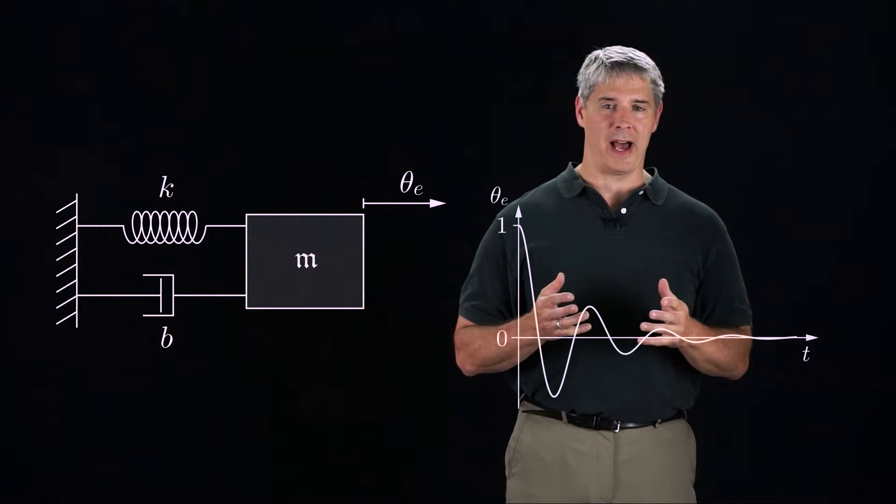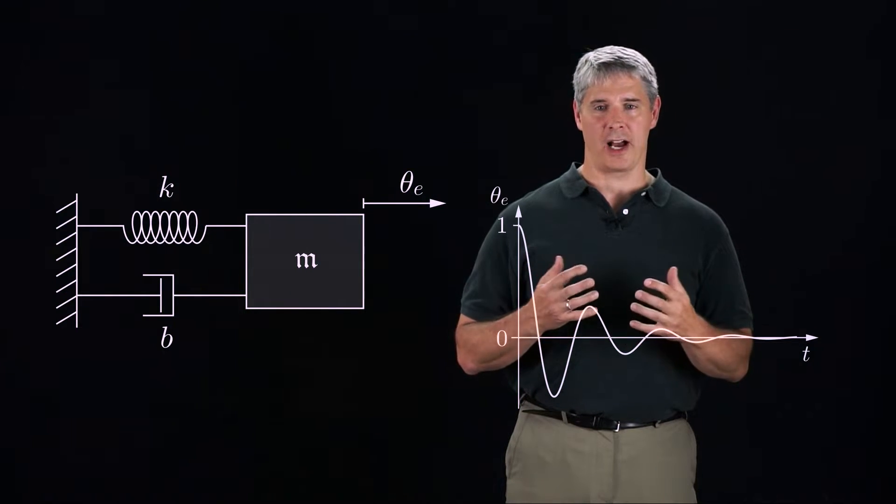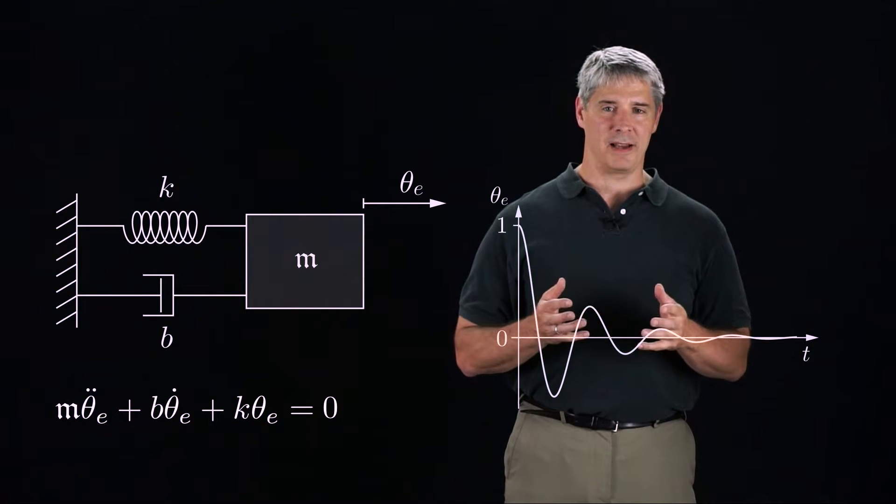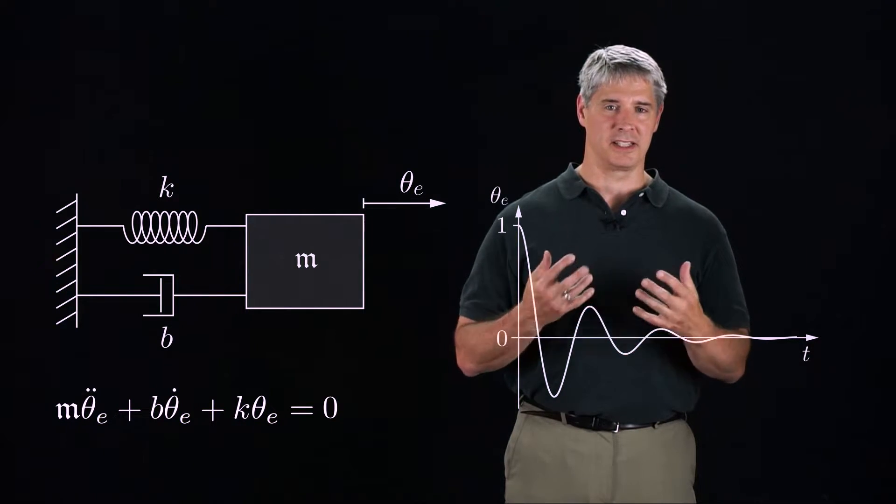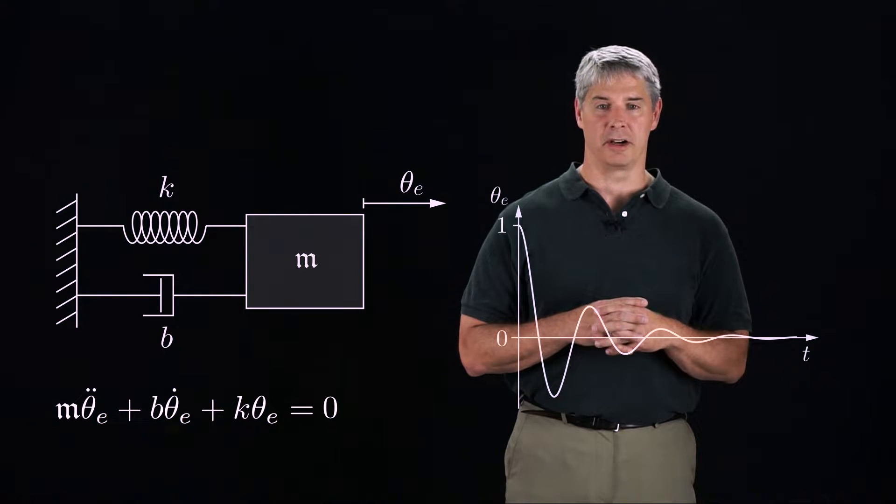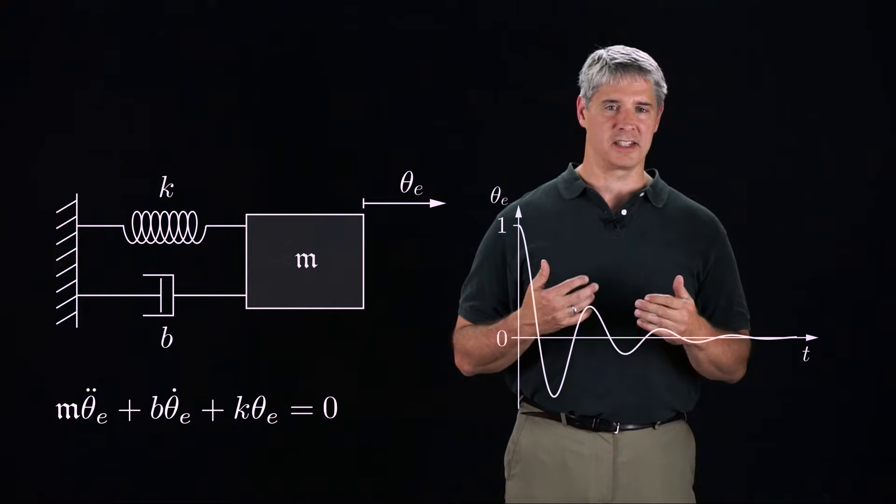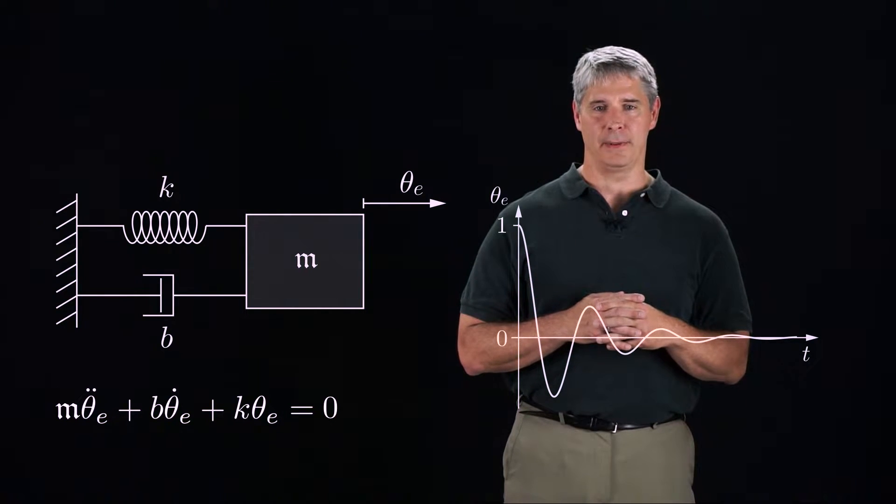The motion of the mass and the error dynamics is described by this linear ordinary differential equation. The mass times acceleration plus the damping times the velocity plus the stiffness times the position is equal to zero. This is called a second-order differential equation, since the second derivative of theta E appears.